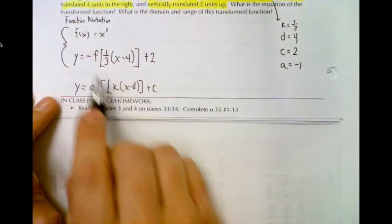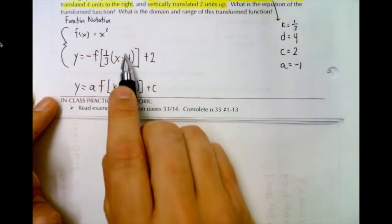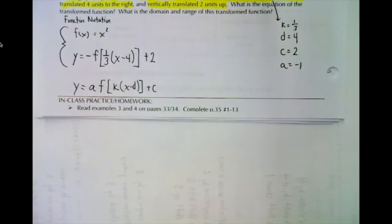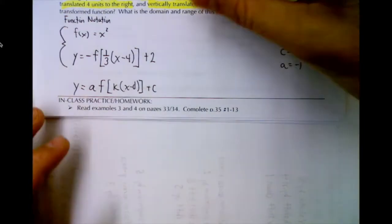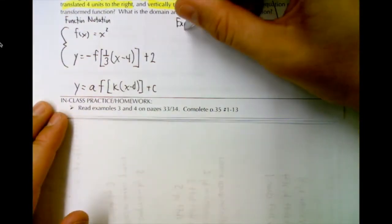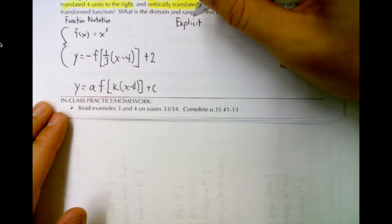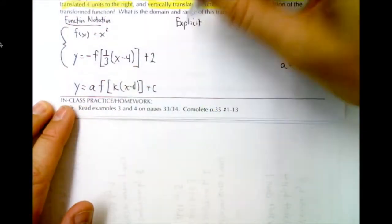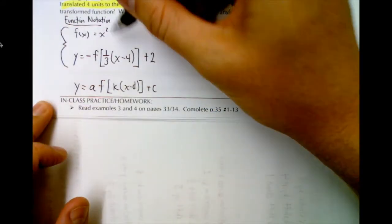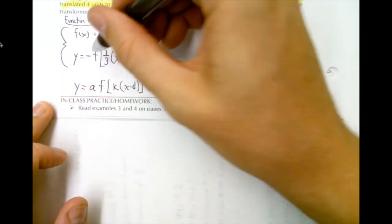So we've just replaced each letter with what we picked out of the equation. That's the function notation. For the explicit equation, we would combine these two.